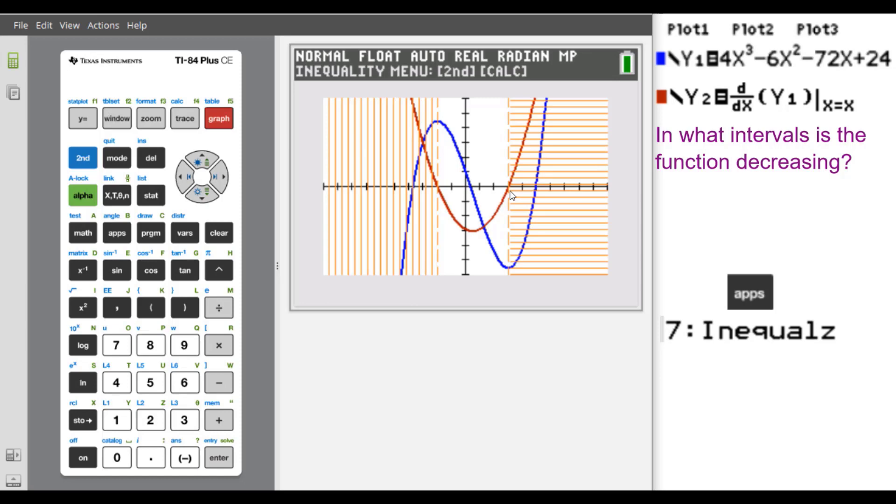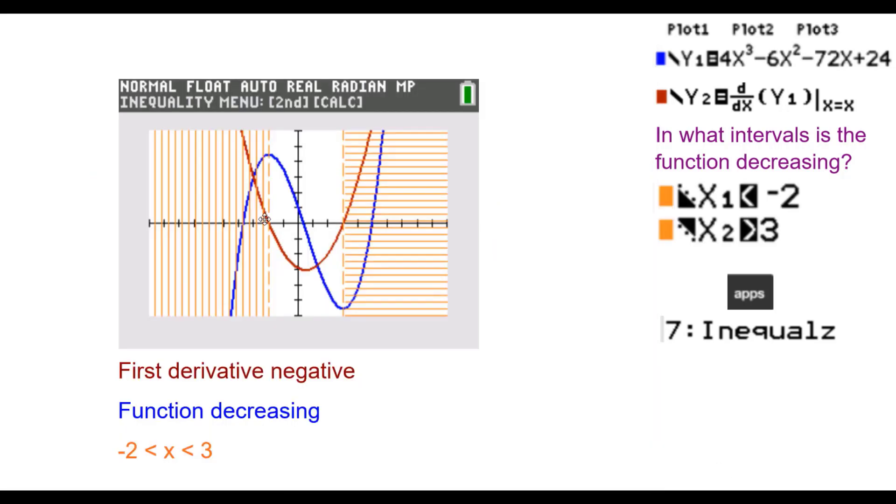And in between is where the function is decreasing. We can see that the first derivative is below the x-axis. It's negative in this interval. And the function is decreasing in this interval.